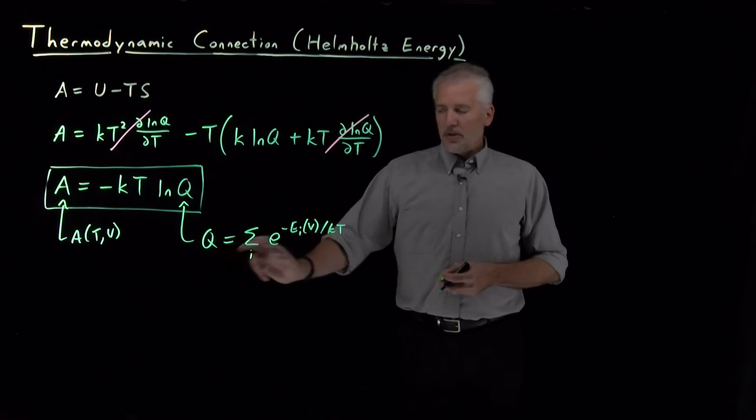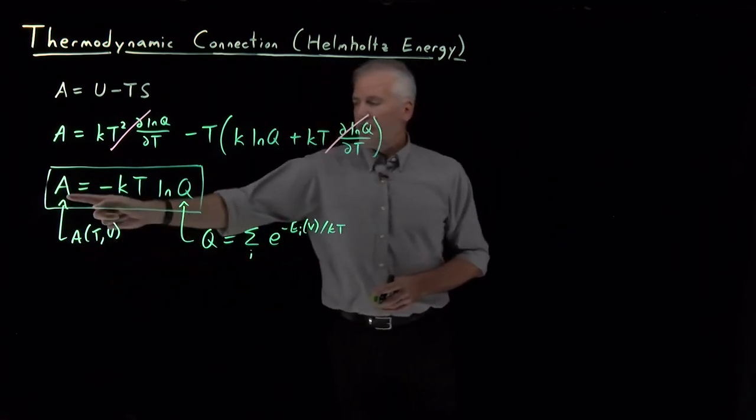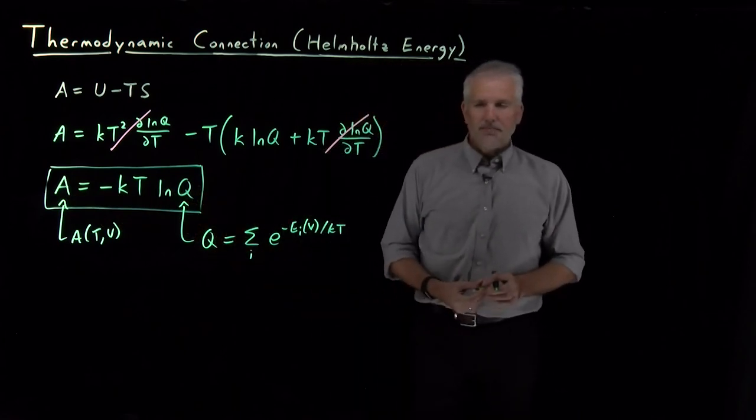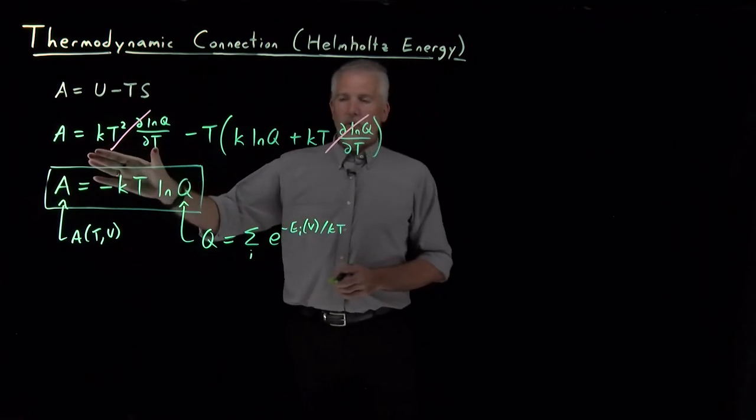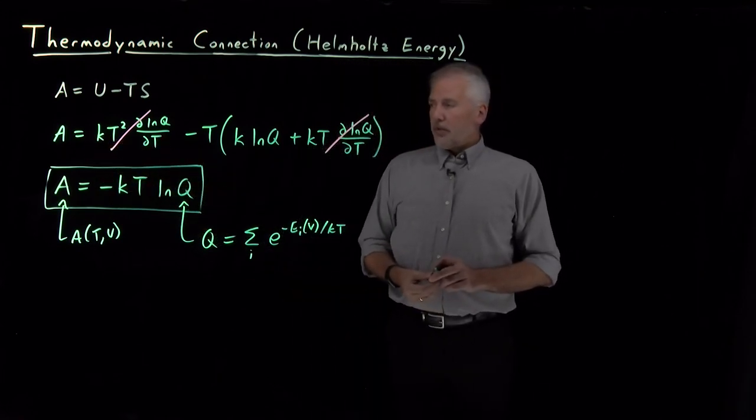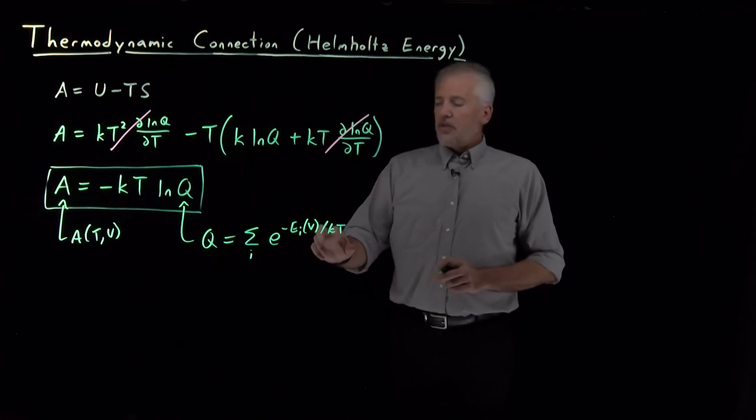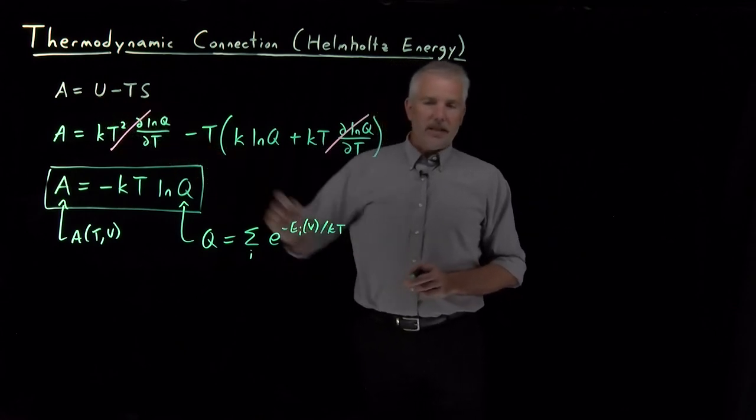So since Q is a natural function of V and T, A is also a natural function of V and T, that means the relationship between them is relatively simple. The thermodynamic connection formulas for these other quantities, like entropy or internal energy, are not quite as simple because it involves changing from a function of T and V to something that's a natural function of S and V, for example.